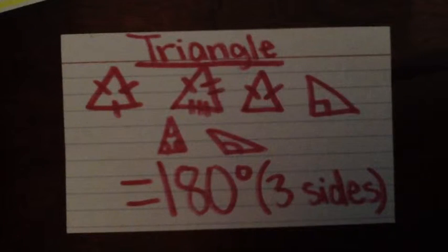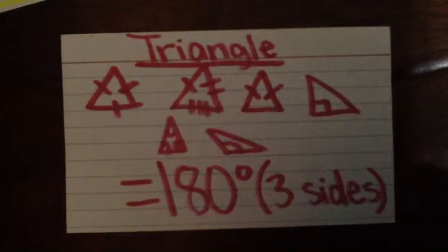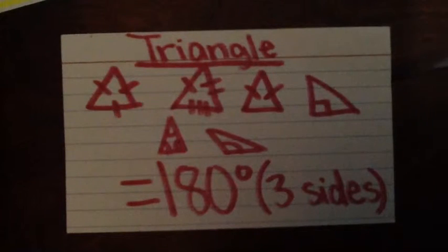There are many types of triangles. There are equilateral triangles with three equal sides and three equal angles. There are isosceles triangles with two equal sides and two equal angles. And there are scalene triangles with no equal sides and no equal angles. There are also right triangles with at least one 90 degree angle,